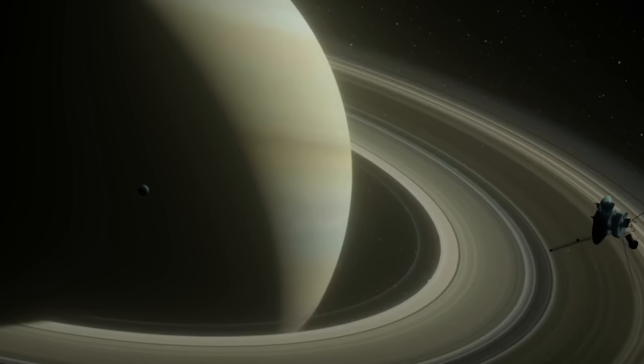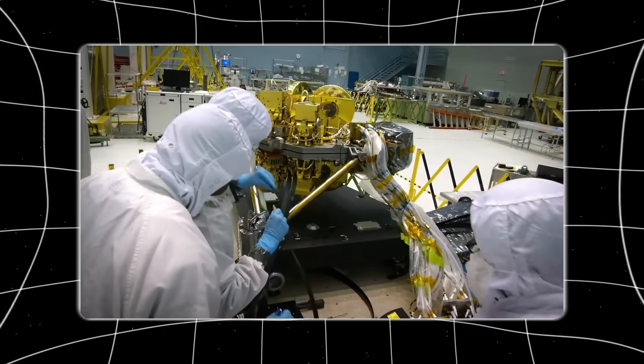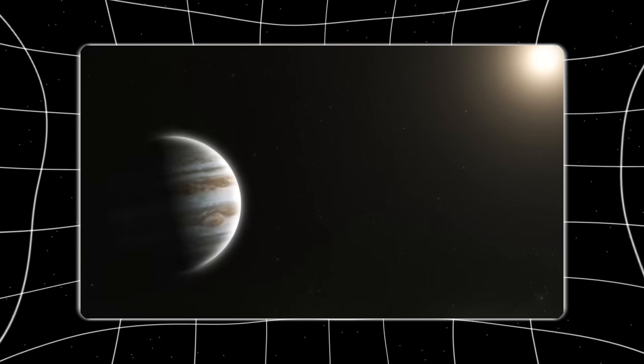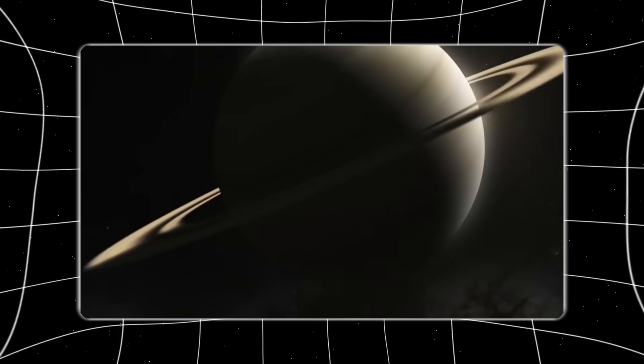Without this alignment, Voyager would have required an impossibly large rocket and vast amounts of fuel. Instead, engineers used gravity assists, allowing the spacecraft to steal momentum from each planet, accelerating it outward step by step.